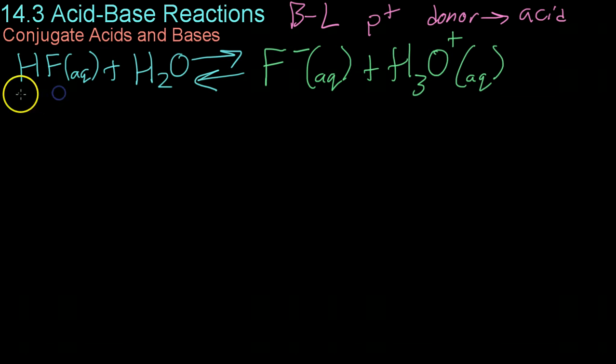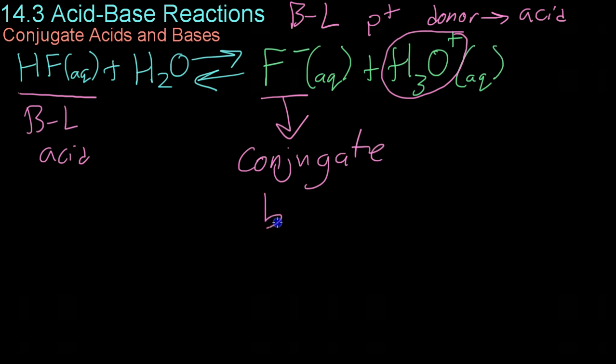You can see that the hydrofluoric acid right here would be a Bronsted-Lowry acid because it gives up its lone proton to join the hydronium over here, leaving only a negative fluorine ion. And this negative fluorine ion is what is known as the conjugate base. That is the species left after a Bronsted-Lowry acid has given up its free proton in solution.